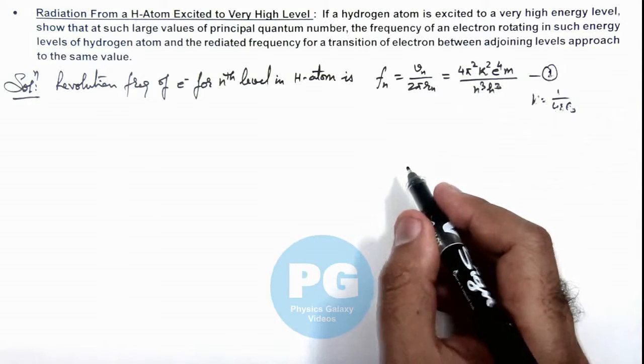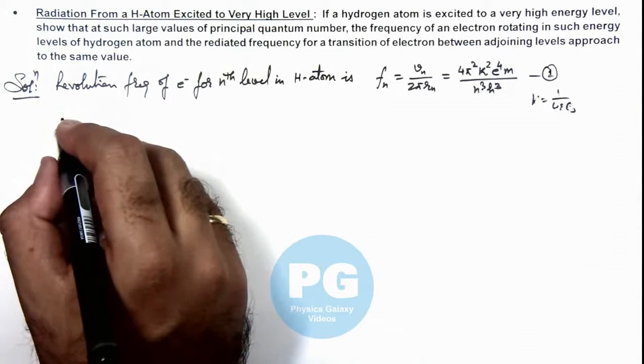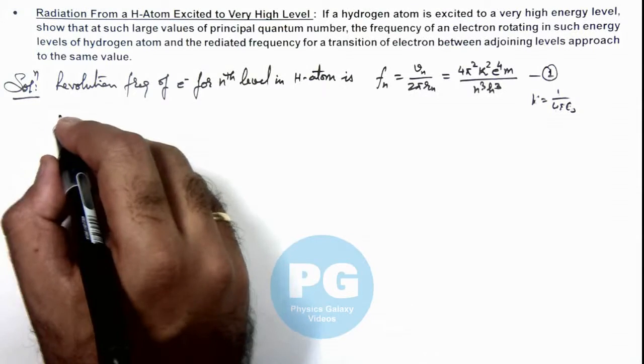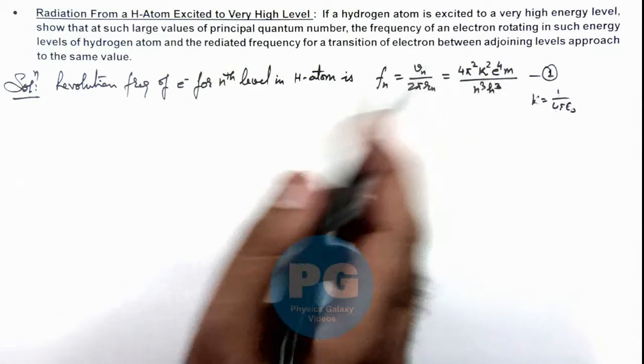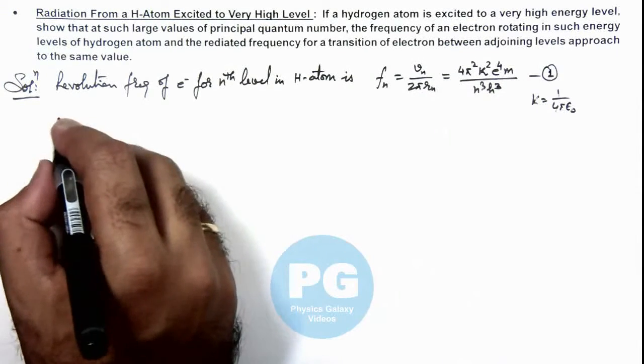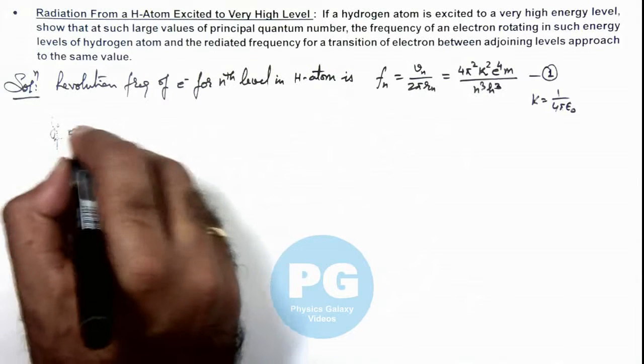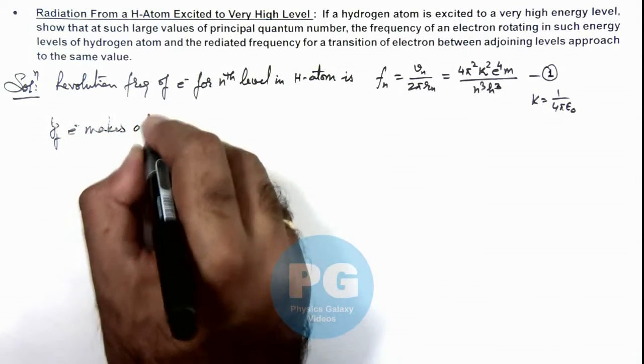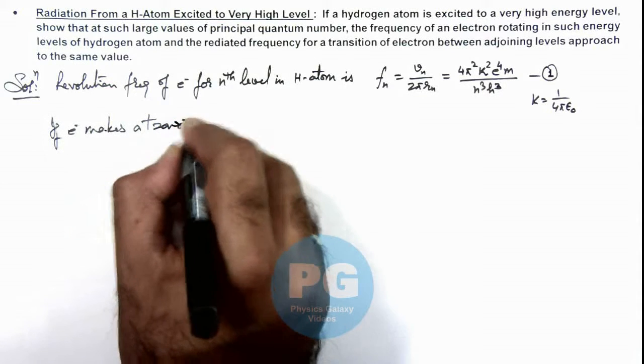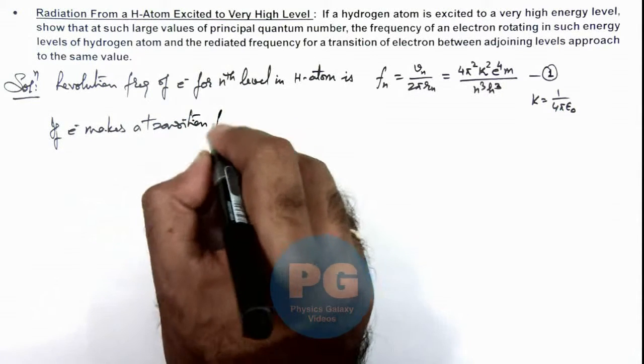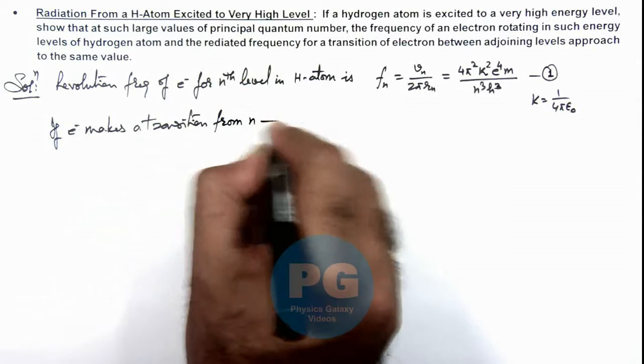So here, if we substitute the value of R, then this frequency ν becomes—we already studied the value of R in concept—2π²k²e⁴m by ch³, and this multiplied by c.